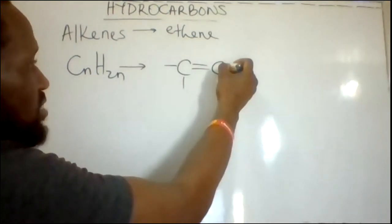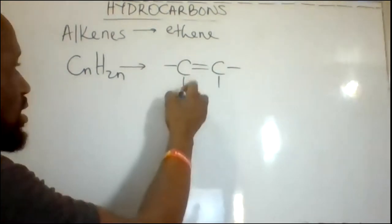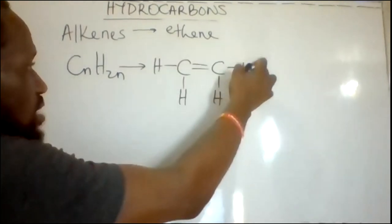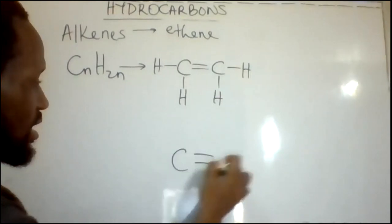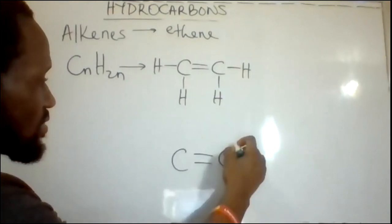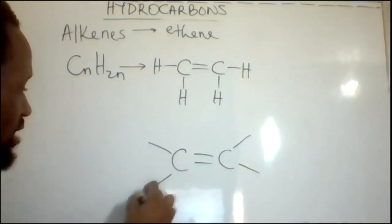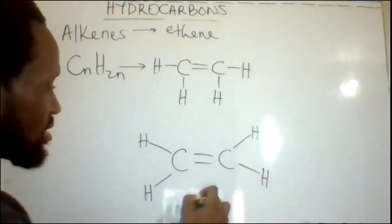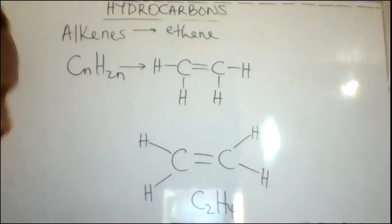Each carbon can take four bonds, so I bring two more bonds to the second carbon. Filling these bonds with hydrogen atoms gives the first member, ethene. Ethene can also be drawn with the hydrogen atoms spaced out around the carbon atoms. This is C2H4, the first member of the alkene series, known as ethene.